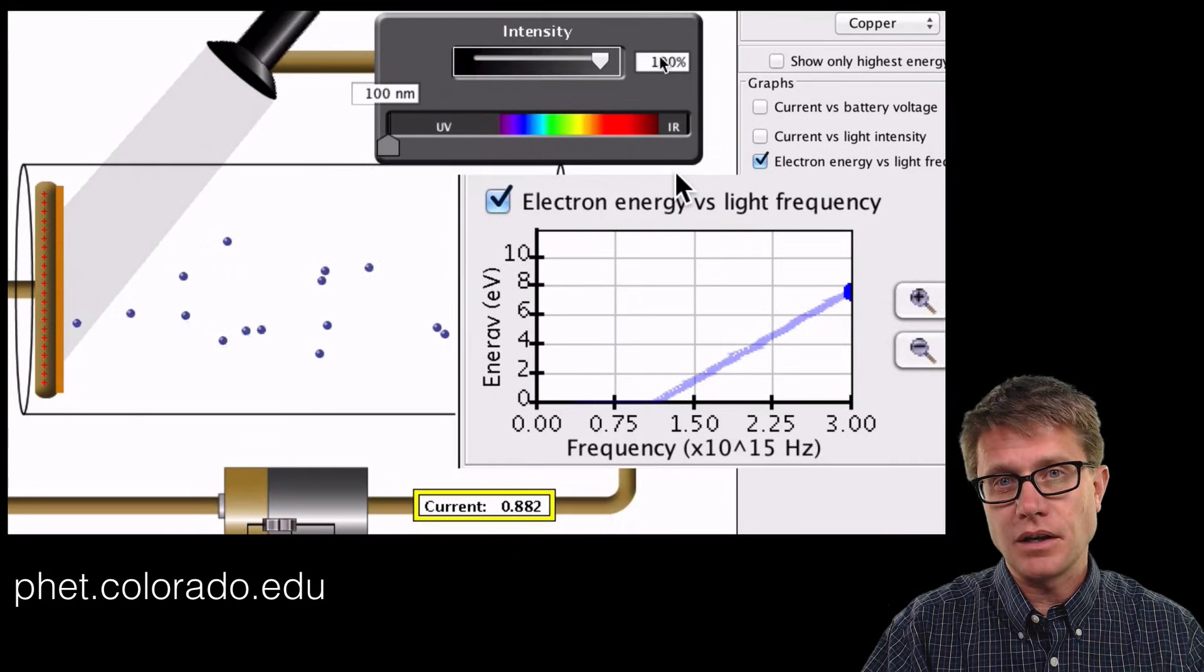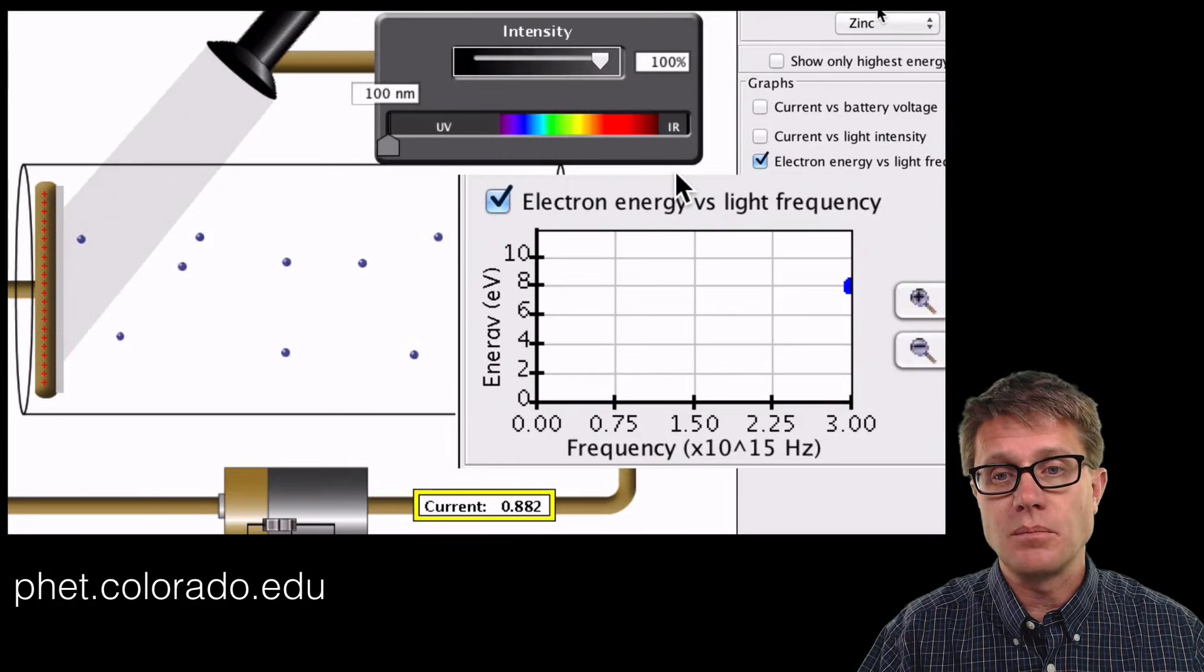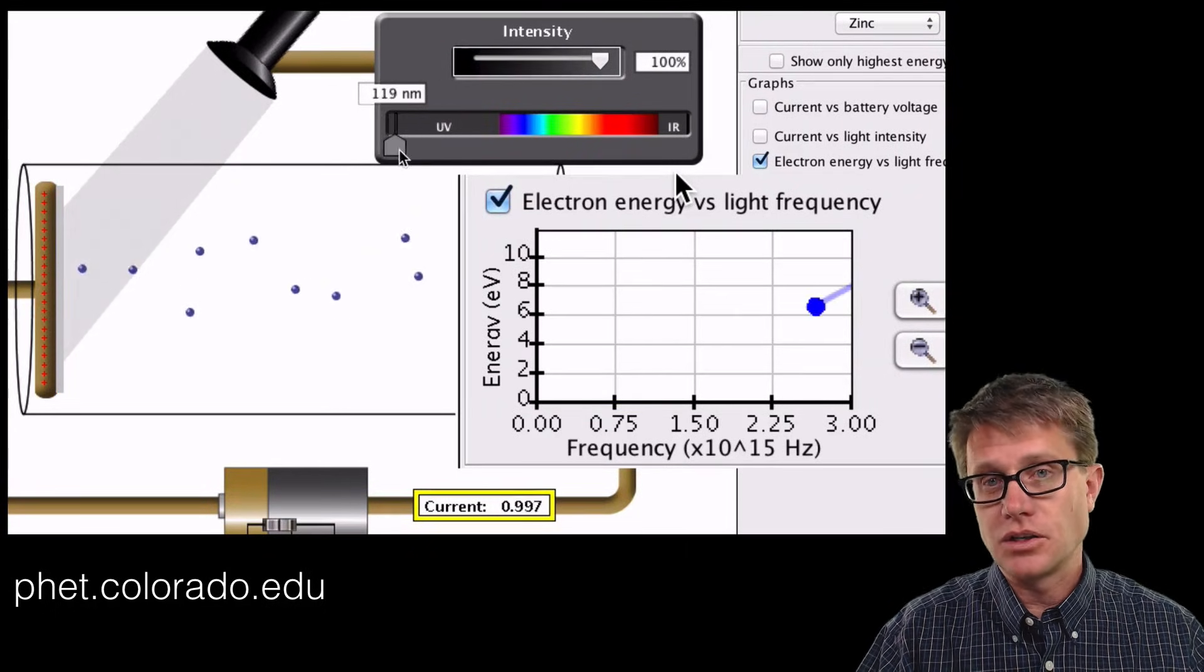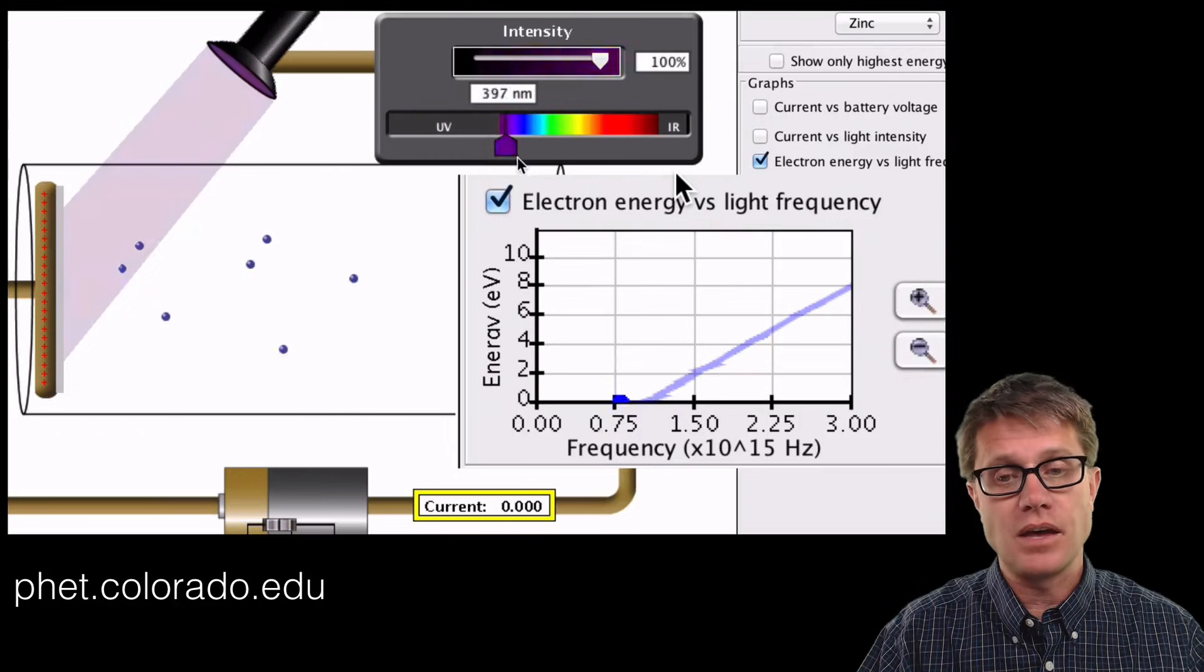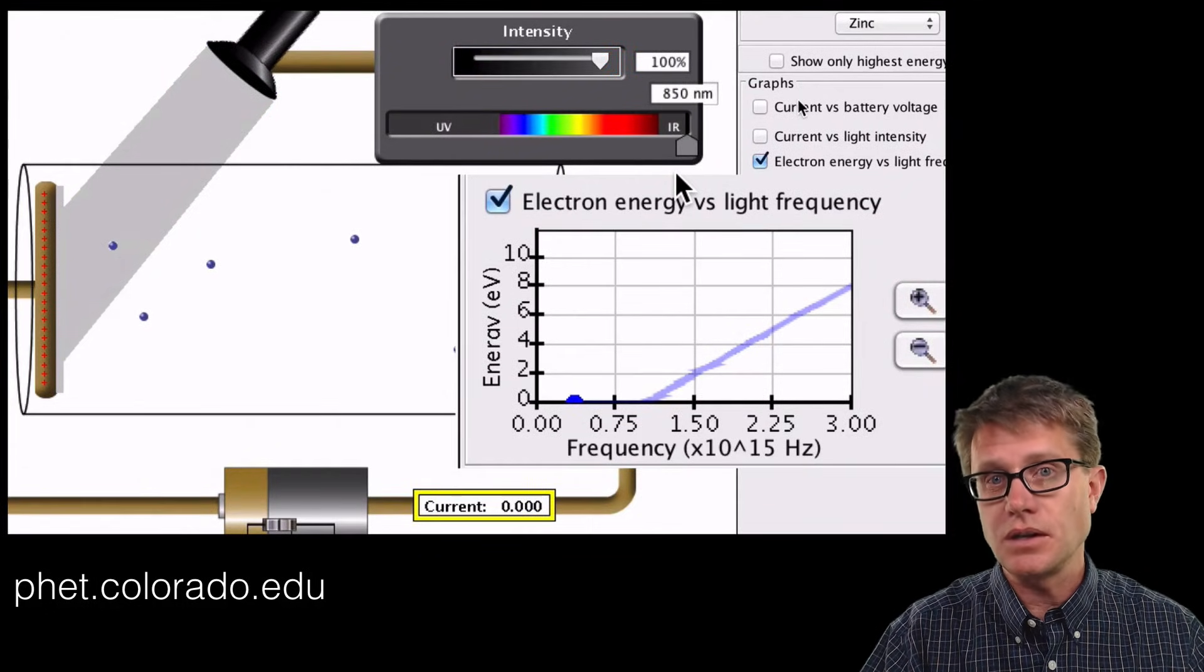So this is using copper plates on either side of this vacuum tube. But we could change it to something else. We could change the metal, for example, to zinc. And now we are going to change the frequency and we see that same graph. That linear relationship between the frequency and the energy.